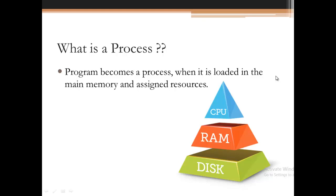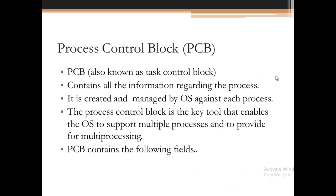When a program is transferred from secondary storage to the main memory and assigned resources, it becomes a process for the operating system. This process then has to be executed by the CPU. Memory itself is a resource, and the processor is the most precious resource — from main memory the program will be transferred to the processor for execution. So a program with assigned resources is called a process.